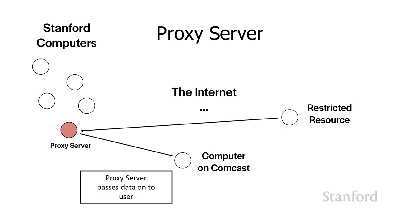Another issue with proxy servers is that the traffic is not encrypted. Whether you're trying to get around the Great Firewall of China or access ESPN at work, the request is going to go in what's referred to as clear text. So if the firewall is smart enough, it can look and say, I see you're sending this to an IP number I don't know about — and if it scans the text of your request, it can see there's a reference to ESPN.com. But for things like accessing resources Stanford has paid for when you are off campus, proxy servers work great.